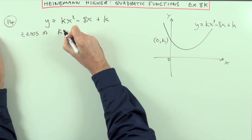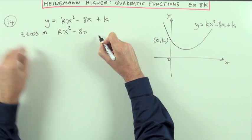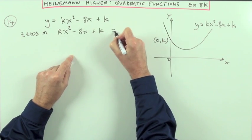So zeros means you're looking at this equation: kx squared, minus 8x plus k should equal zero.